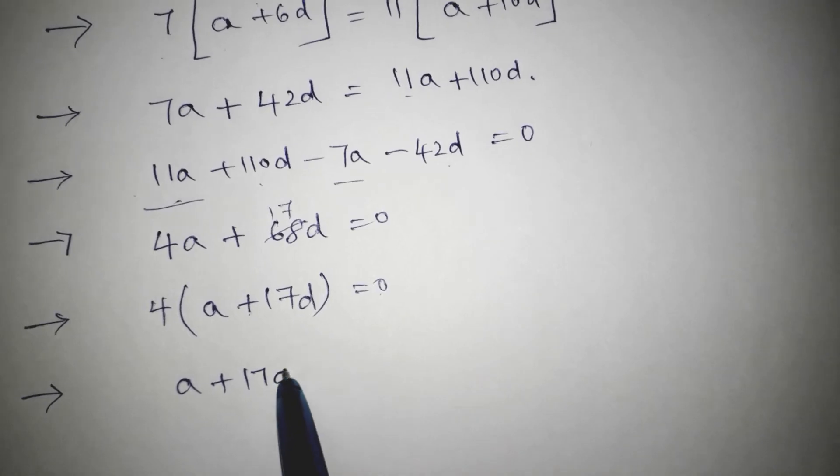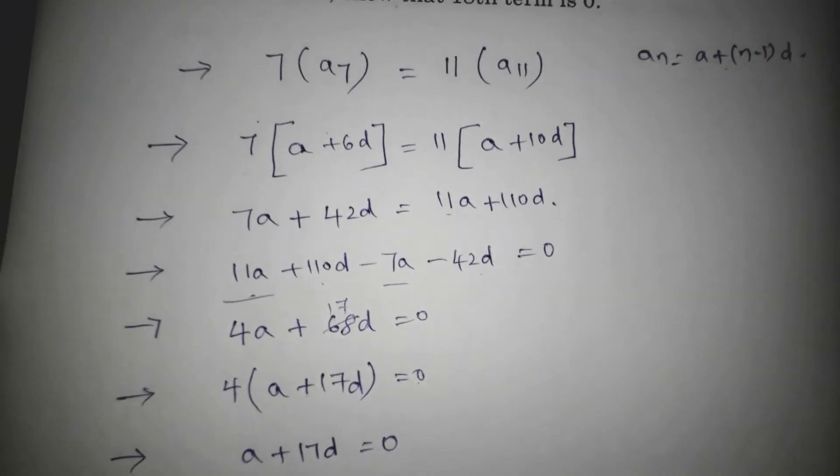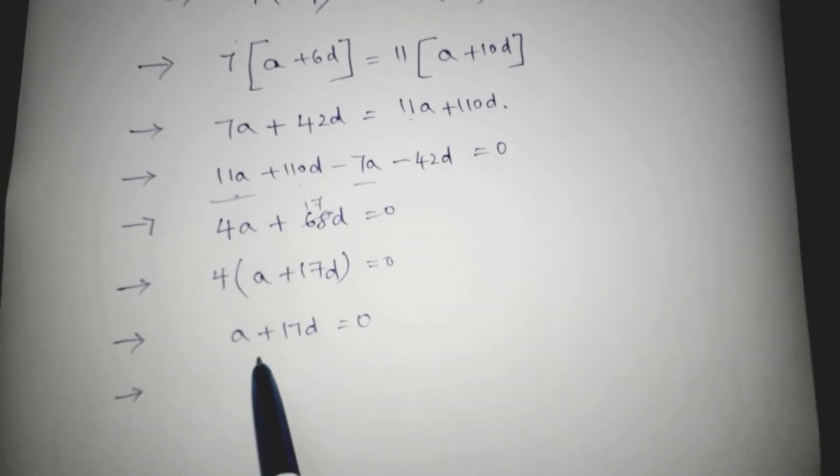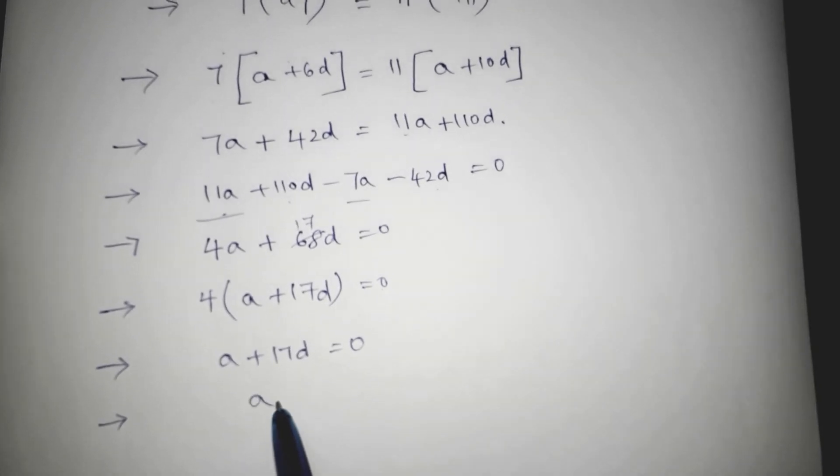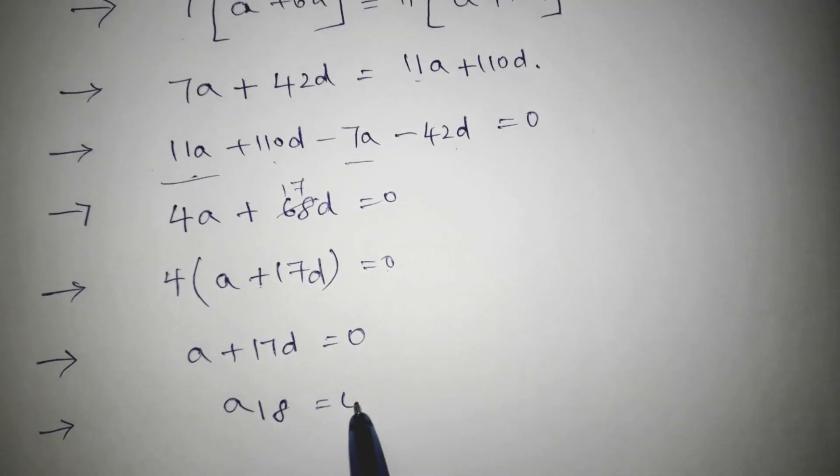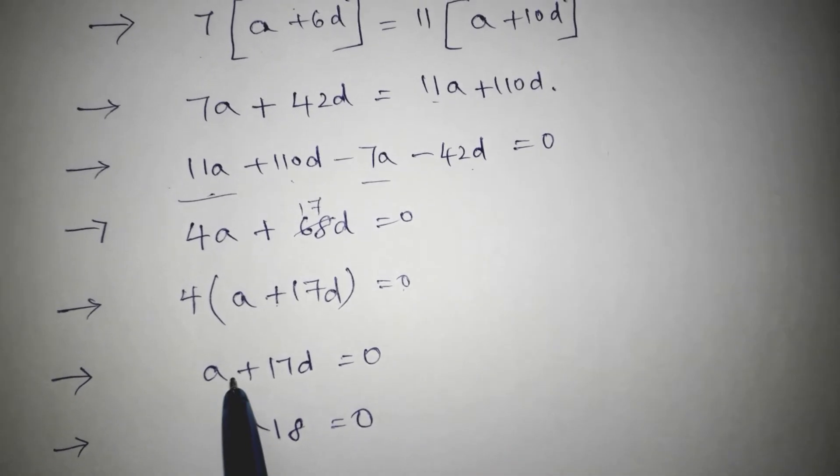So, a plus 17d equals 0. But a plus 17d is nothing but a_18 is 0. The 18th term is nothing but a plus 17d.